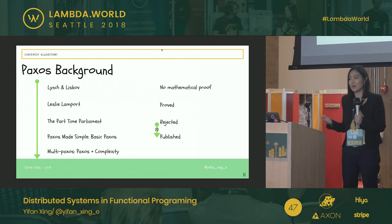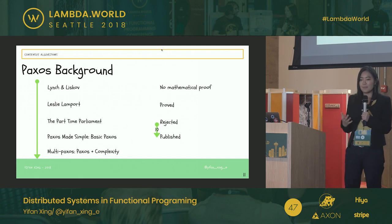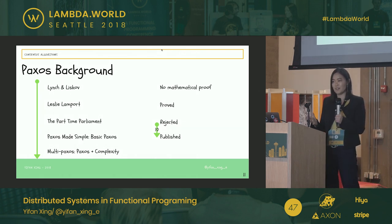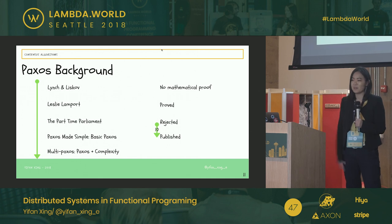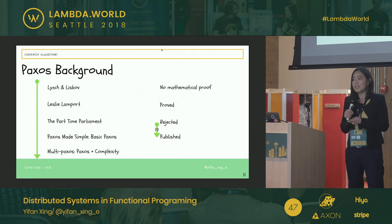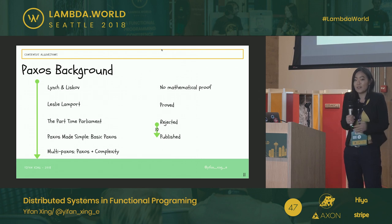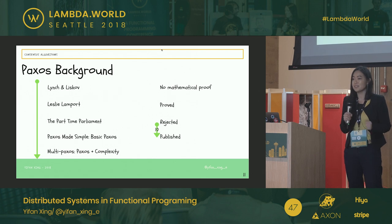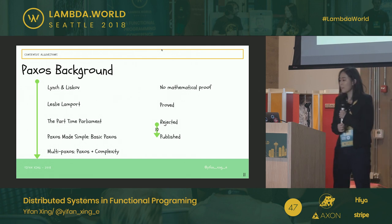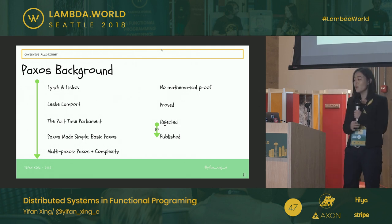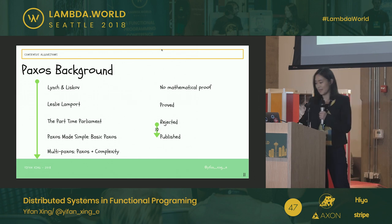The problem was that nobody could really understand what he was talking about — people were so caught up in the game and the fancy names in the paper. One day at a conference, people said they couldn't understand his paper and asked him to just explain. He sat down, didn't talk about any of the story, simply explained Paxos, and people understood. So he went home and wrote a paper called Paxos Made Simple, which describes how Paxos works. He also wrote a paper called Multi-Paxos, which is essentially Paxos with added complexity on top.